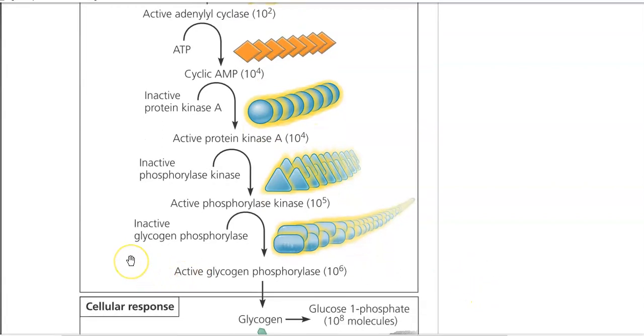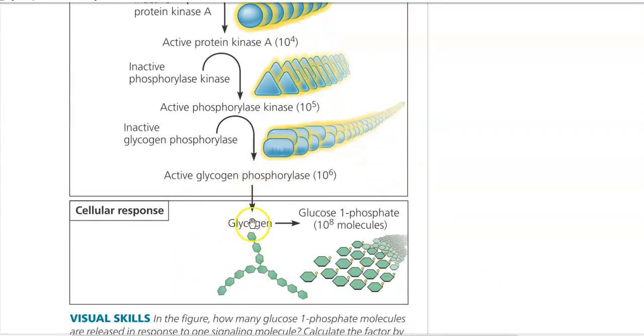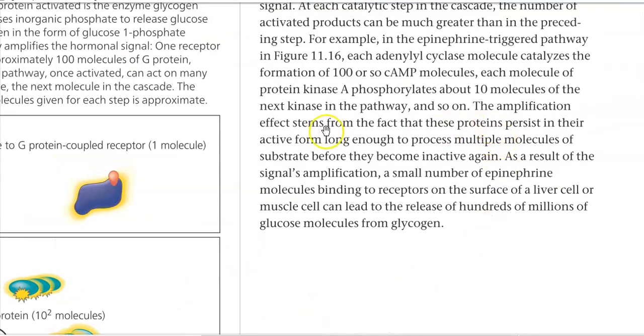So, now, the inactive glycogen phosphorylase is converted into active glycogen phosphorylase, which in turn acts upon the glycogen and converting into glucose 6-phosphate molecule. So, this glucose 6-phosphate molecule is the available form of glucose that have been obtained from the stored carbohydrate that is the glycogen. The amplification effect stems from the fact that these proteins persist in their active form long enough to process a multiple molecules of substrate before they become inactive again.